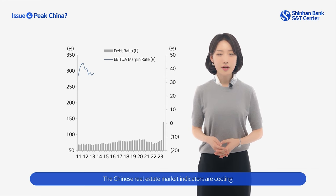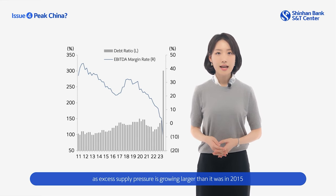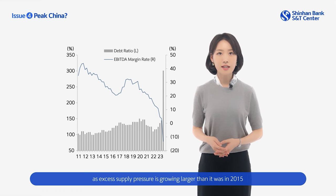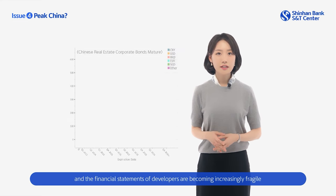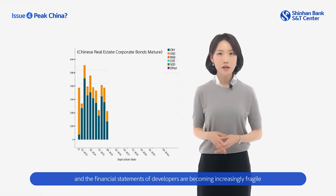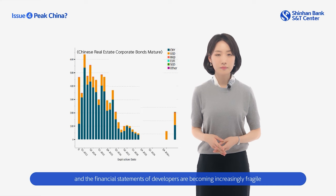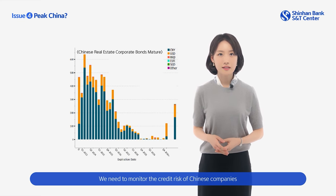The Chinese real estate market indicators are cooling, as excess supply pressure is growing larger than it was in 2015 when it experienced deleveraging, and the financial statements of developers are becoming increasingly fragile. We need to monitor the credit risk of Chinese companies.